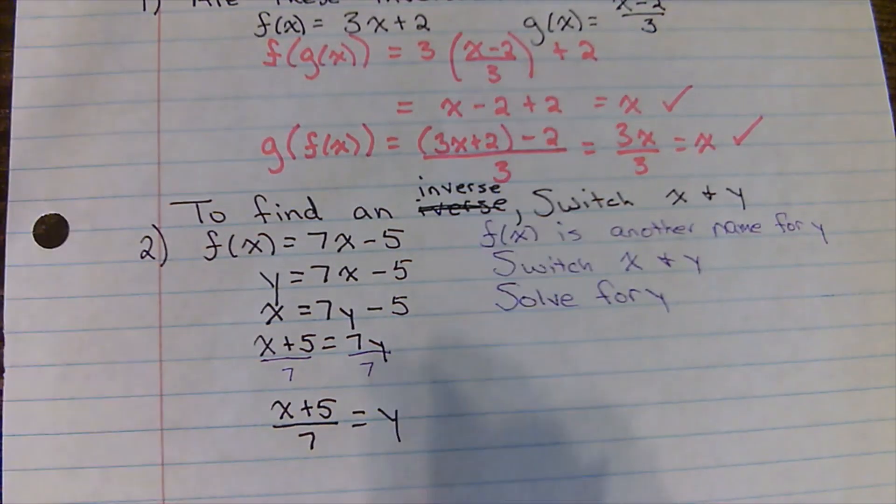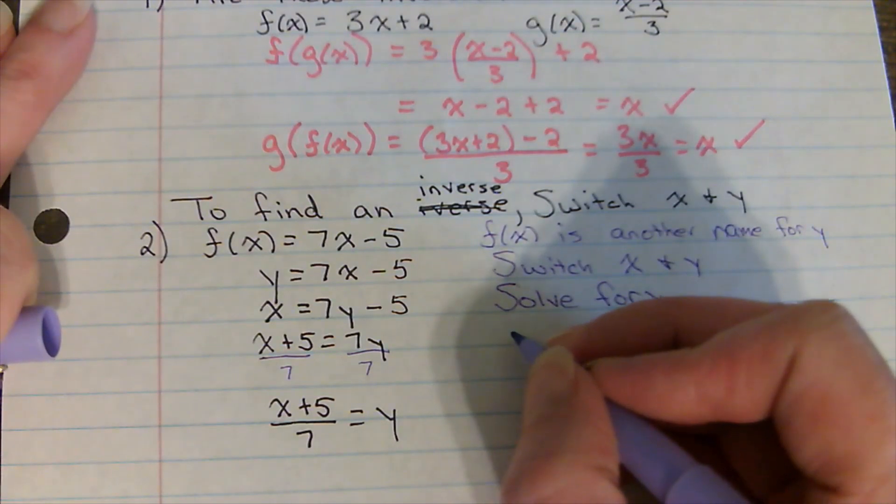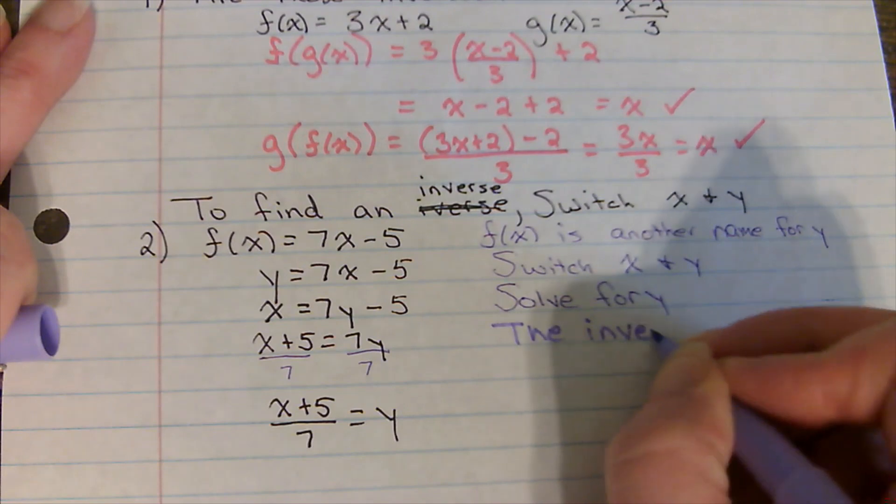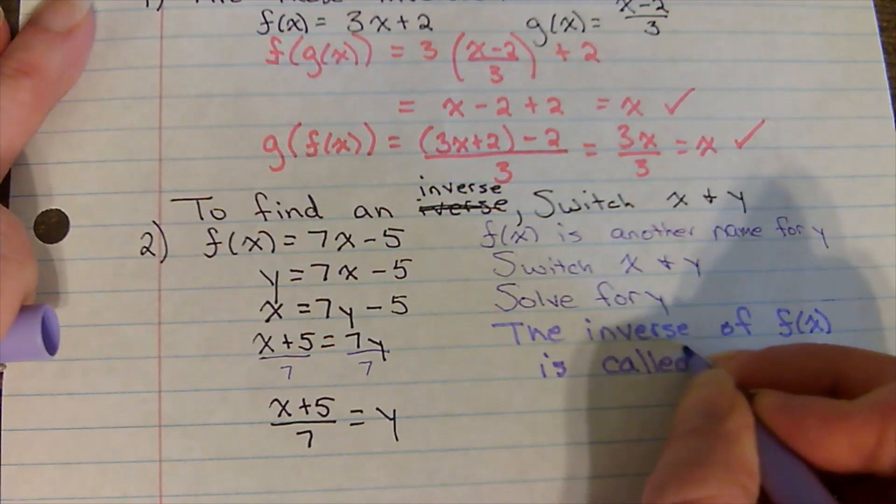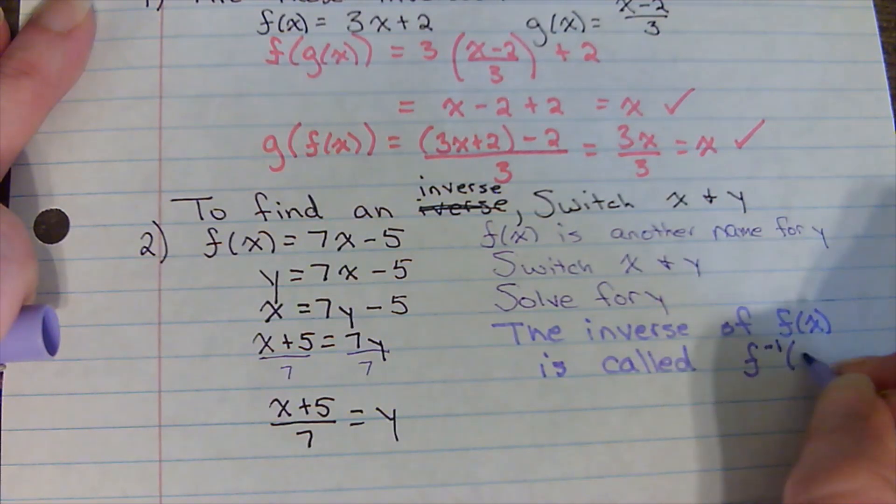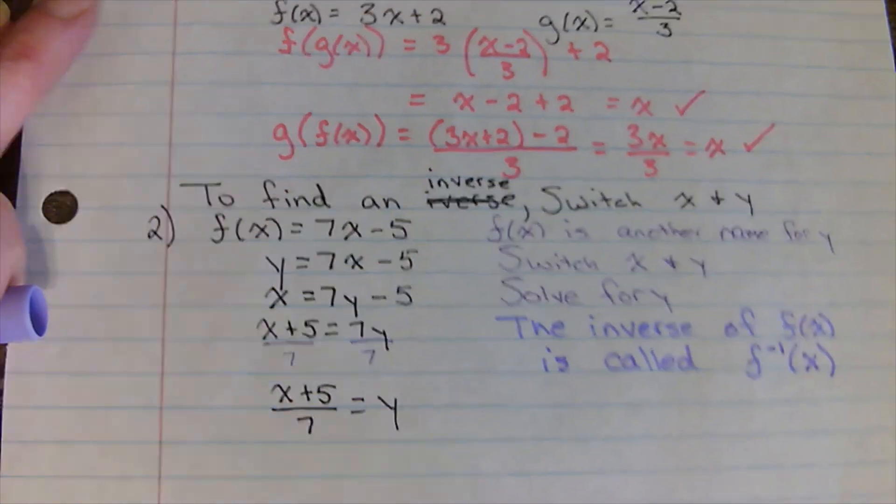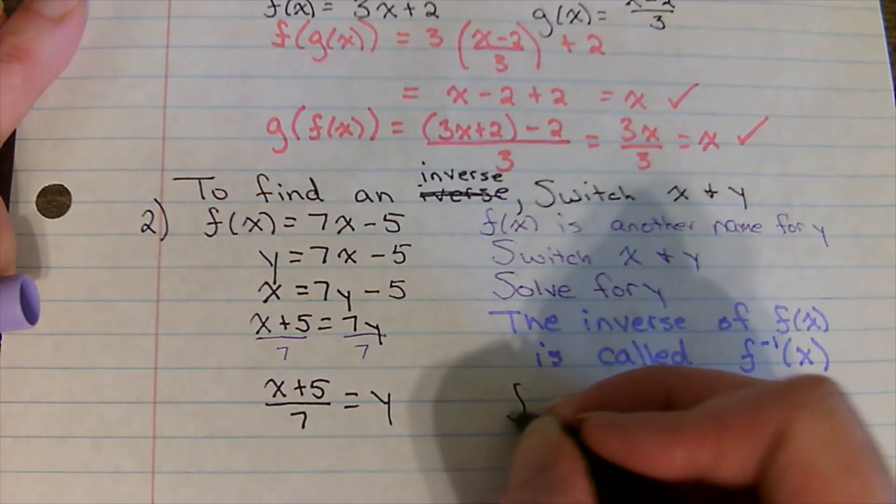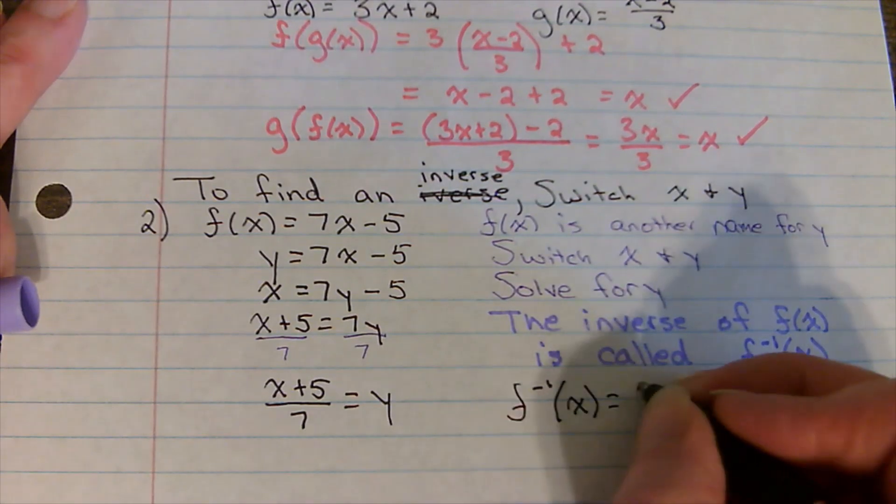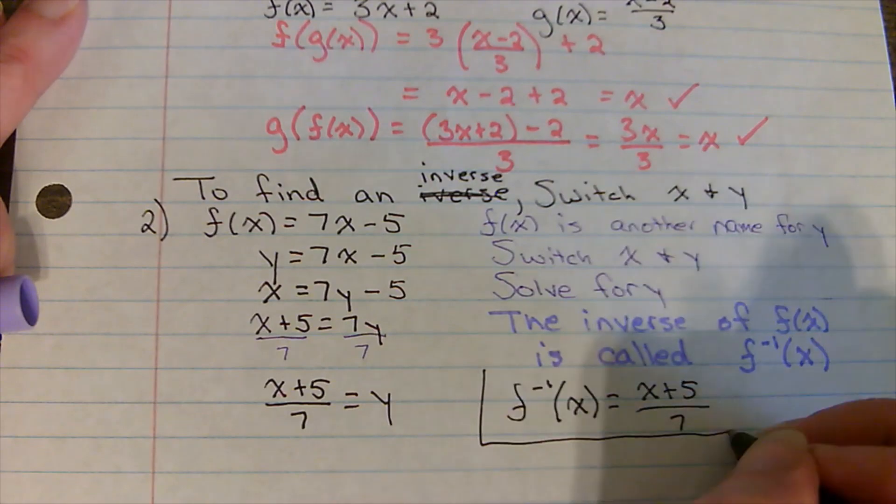Well, that is a correct answer, but it's not the best way to leave it. So when we have solved for y, we want to call this by its proper name. So there's a proper name for an inverse. The inverse of f of x is called f inverse, little negative one of x. That means inverse. So instead of y, I want everybody to know this is f of x's inverse. He's going to undo that function. We're going to call it by its proper name, inverse of f.